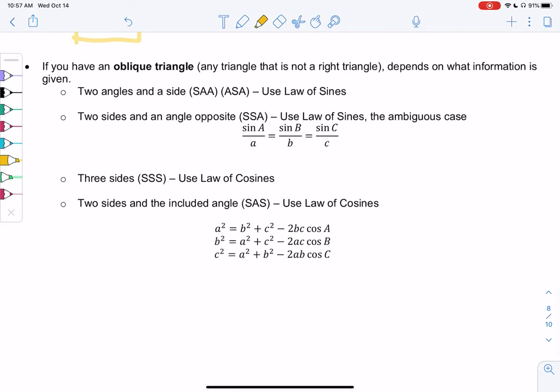But if you have an oblique triangle, any triangle that's not right, that's where things start to get confusing. So it depends on what information is given.